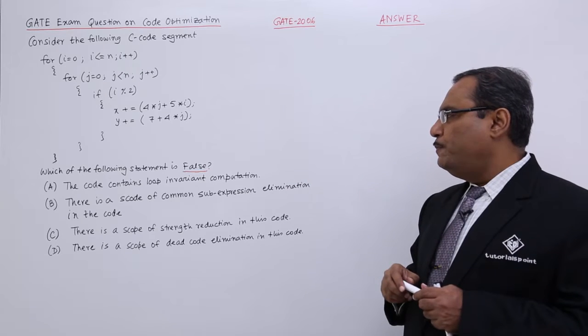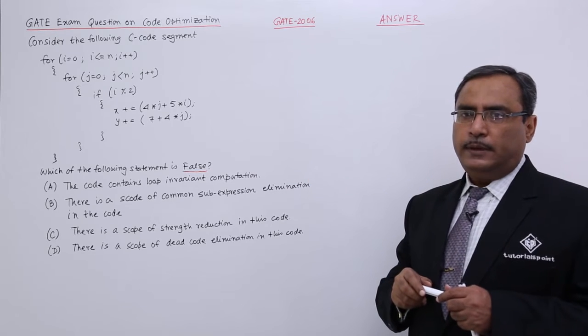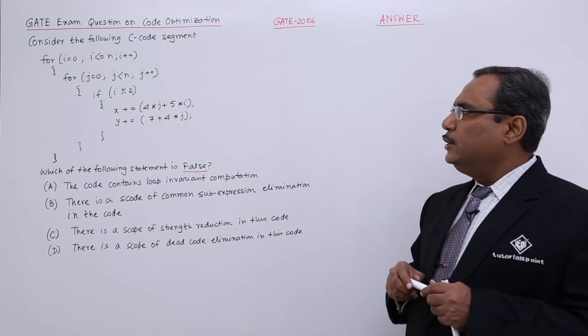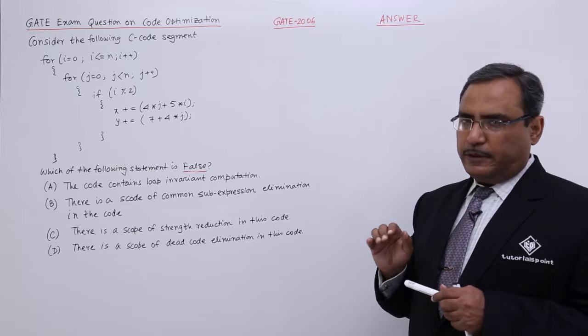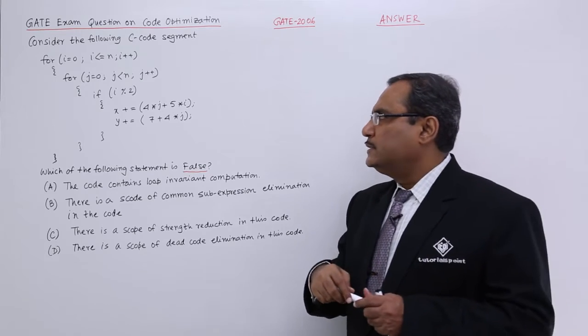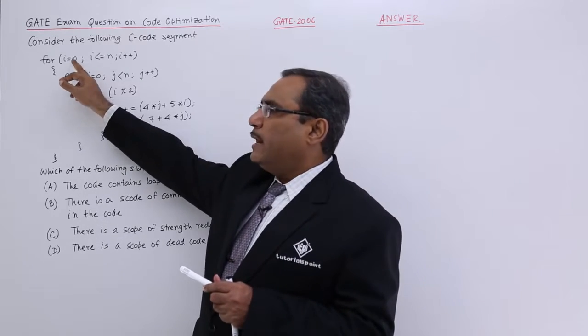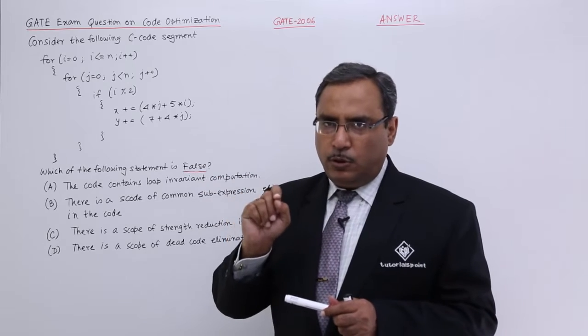The code contains loop invariant computation. I shall have to find out whether any loop invariant computation here is in this particular code is present or not. See in the outer loop we are having i as the control variable, loop control variable.